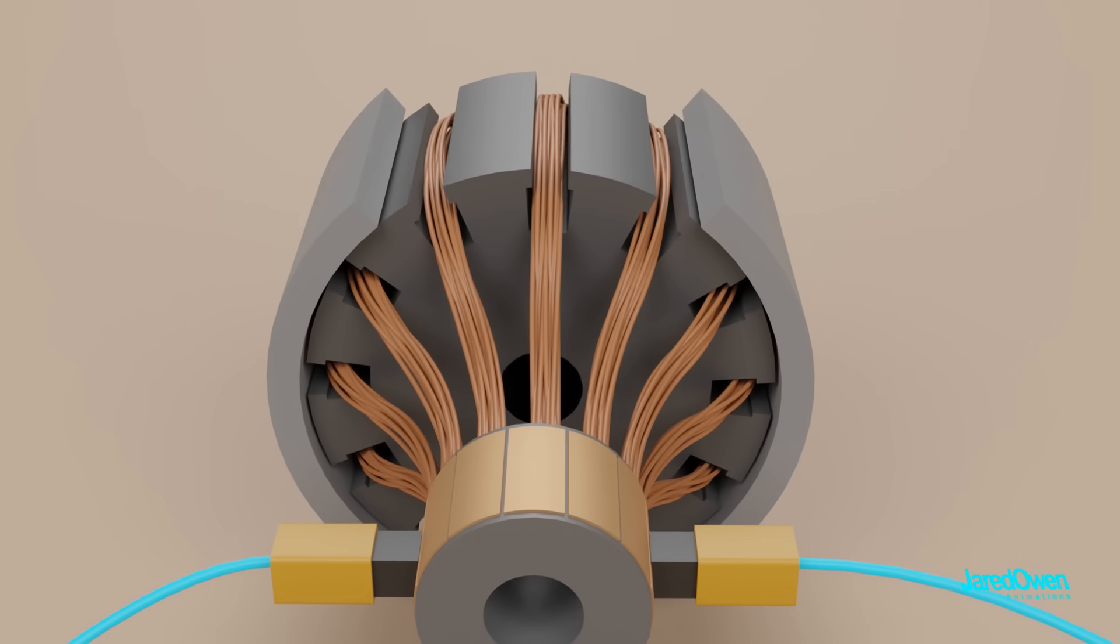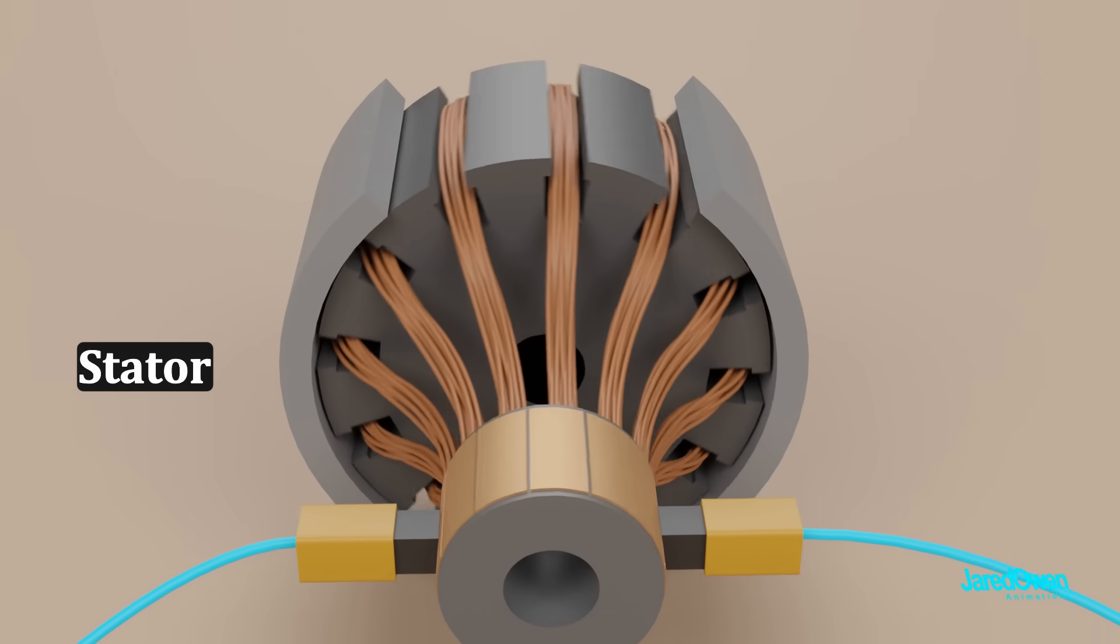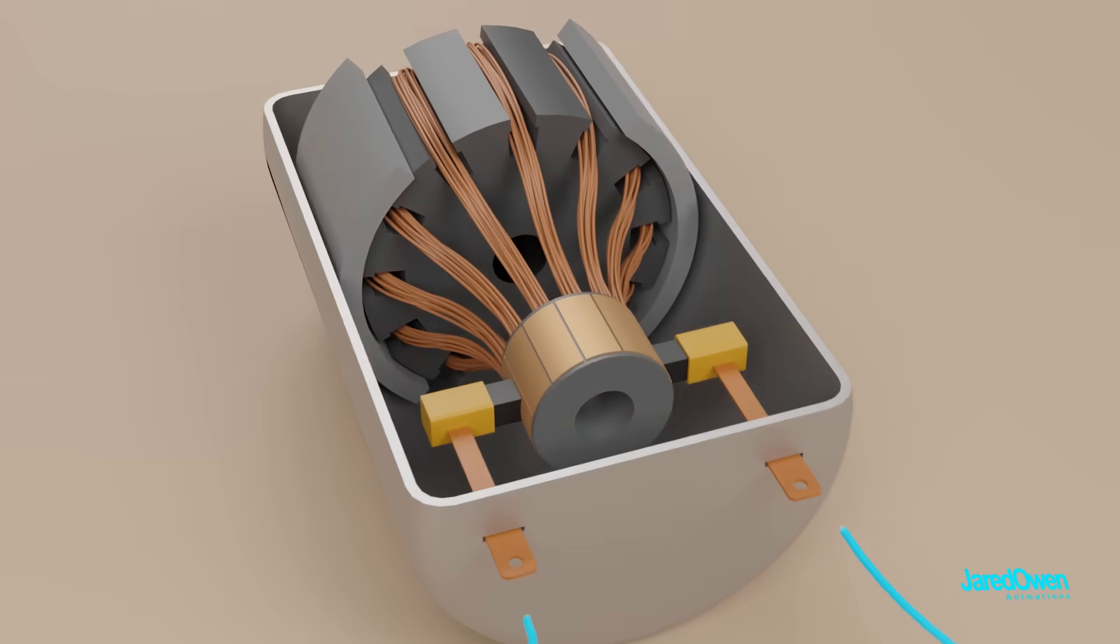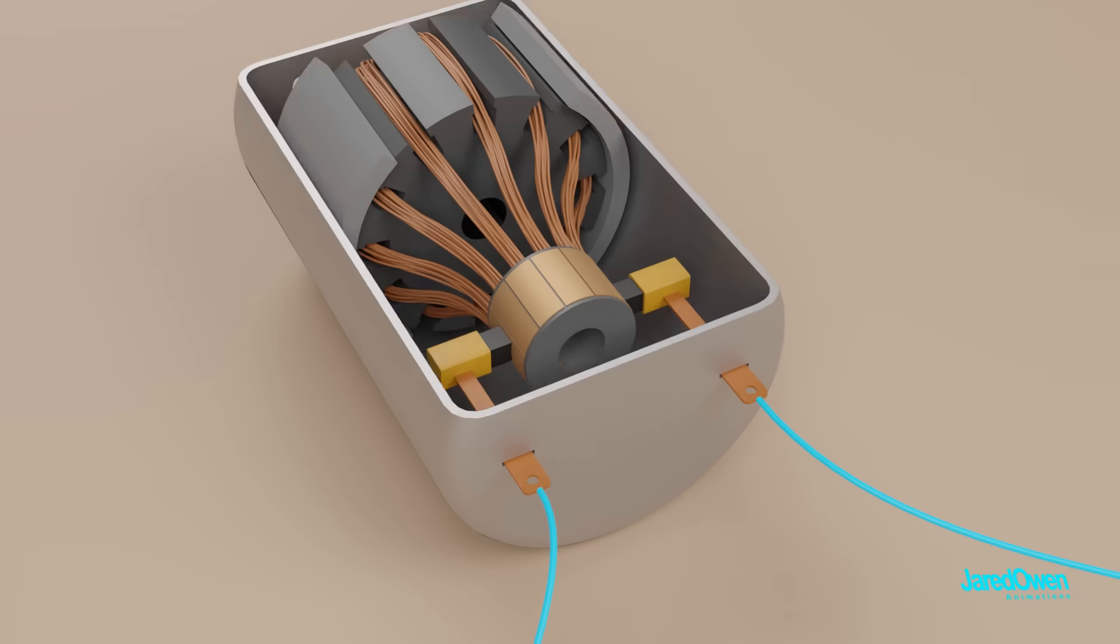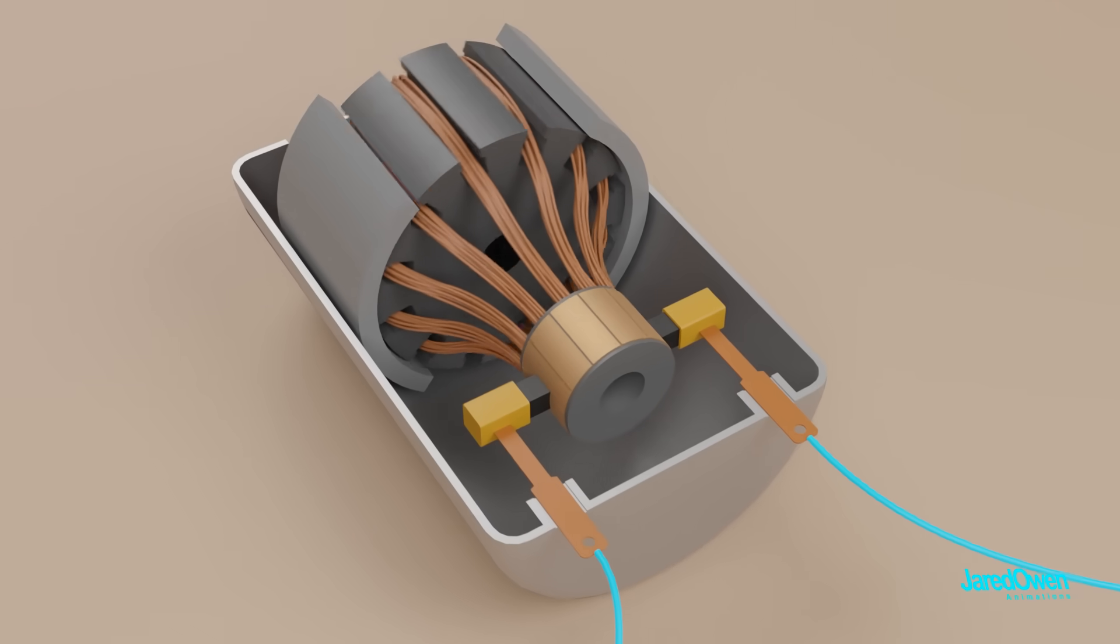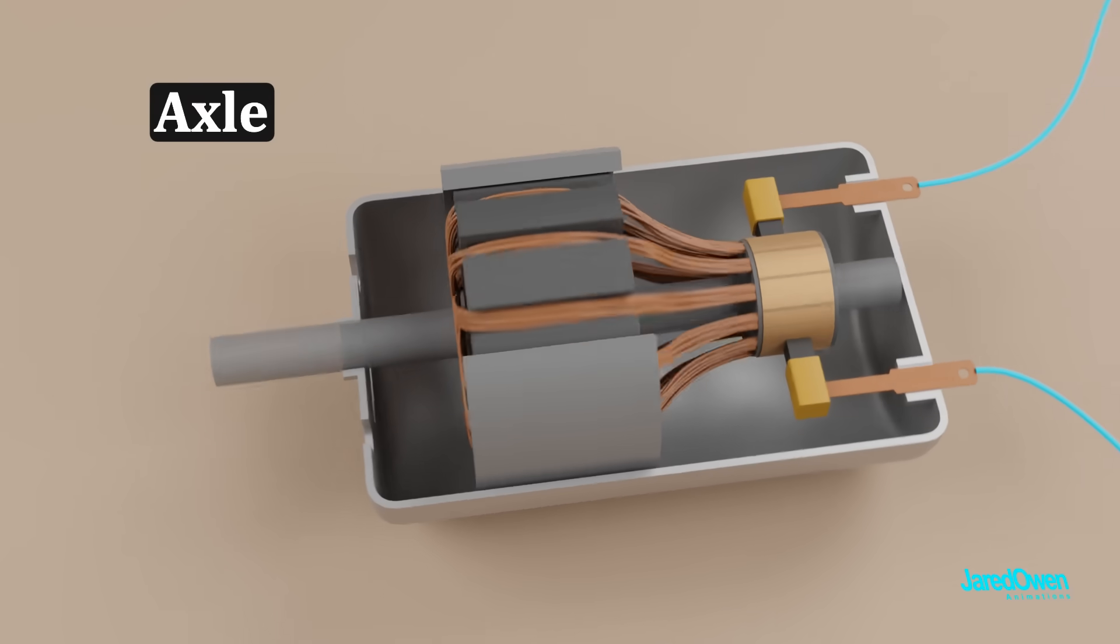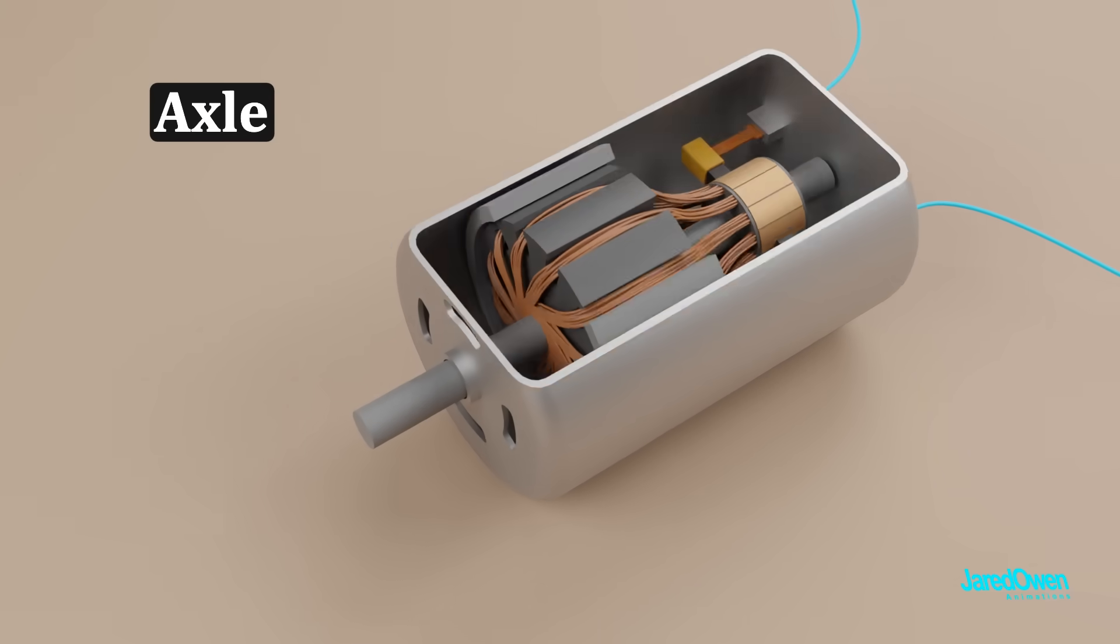Let's learn a few more terms here. The part that doesn't move is called the stator. In this case, it's the two permanent magnets on the side. These fit inside the edges of the motor case. The armature in the middle is also called a rotor. Remember, this is the part that spins. The axle goes through the middle here and then sticks out the back of the motor.